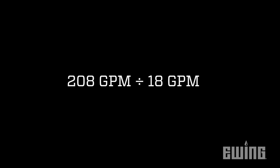The last bit of information we need is the available water at the source. In our example, we have 18 gallons per minute. Take the 208 total gallons per minute and divide it by the 18 gallons per minute at the source, and that gives us the total number of zones, which is 12.